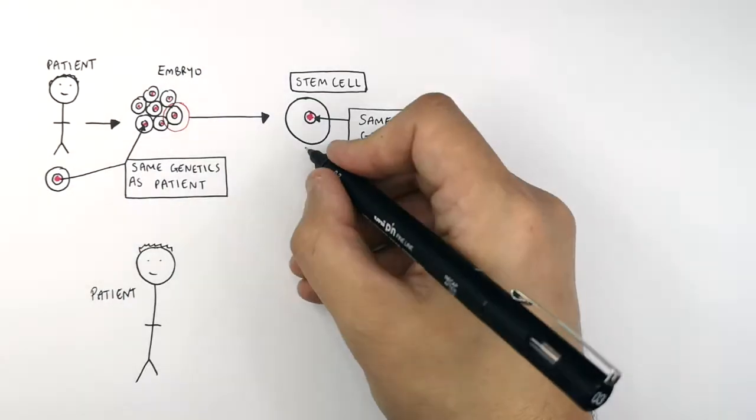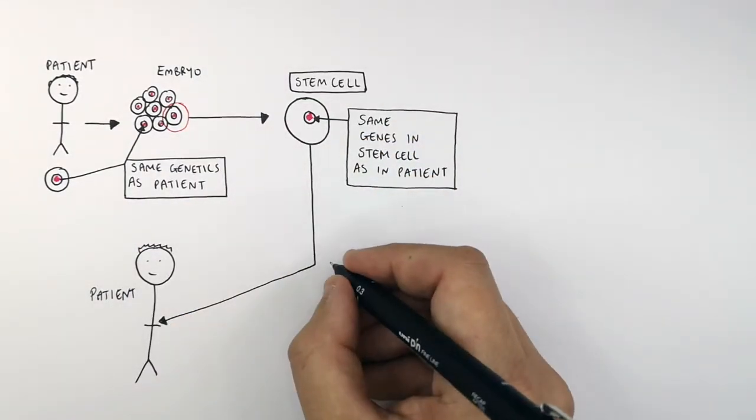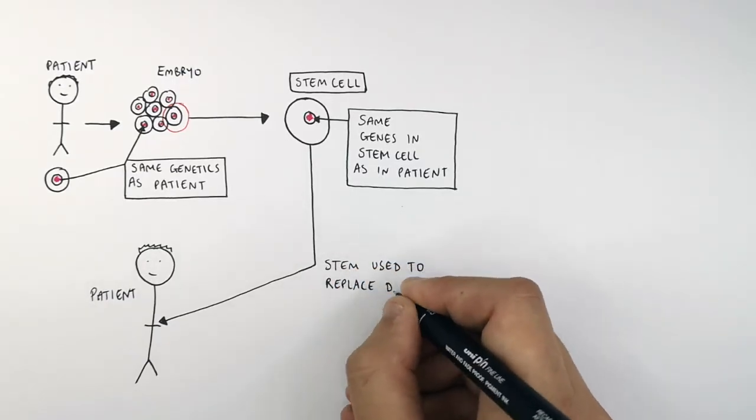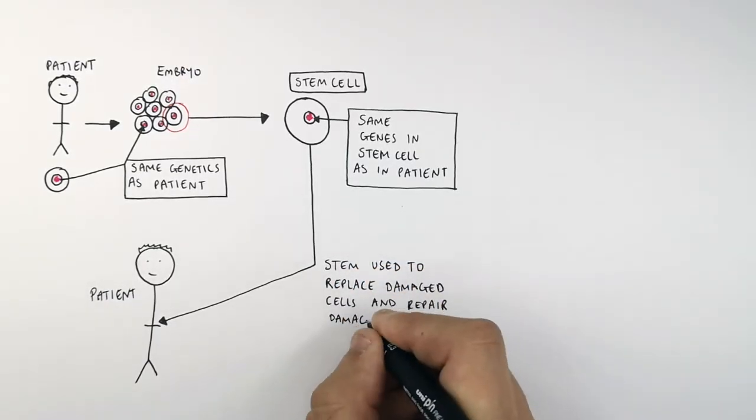So if the patient needs tissue repairing or cells replacing due to an illness, this stem cell can be used to replace damaged cells and repair damaged tissue.